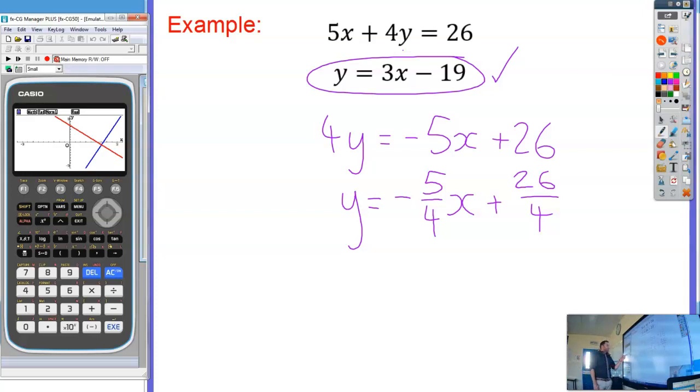But if you're not sure, you can press G solve, graphical solve, F5 there. And intersect is what we want, intersect, so F5 again. And it will take a little bit of time, and then it will give you the point of intersection. And you can see at the bottom of here it says X equals 6 and Y equals minus 19.